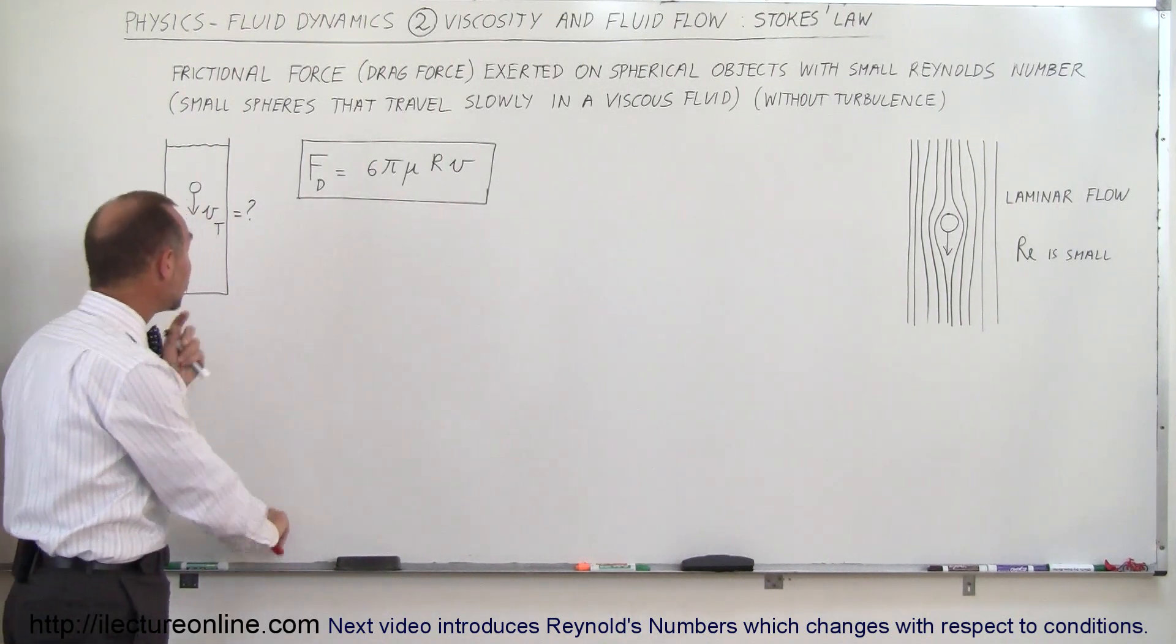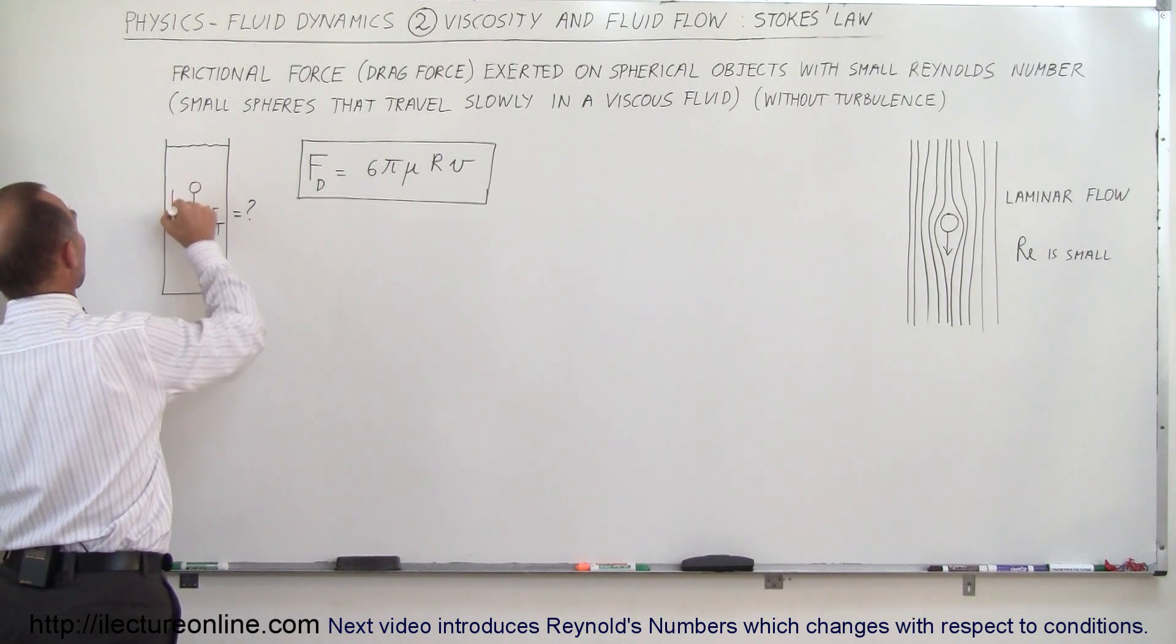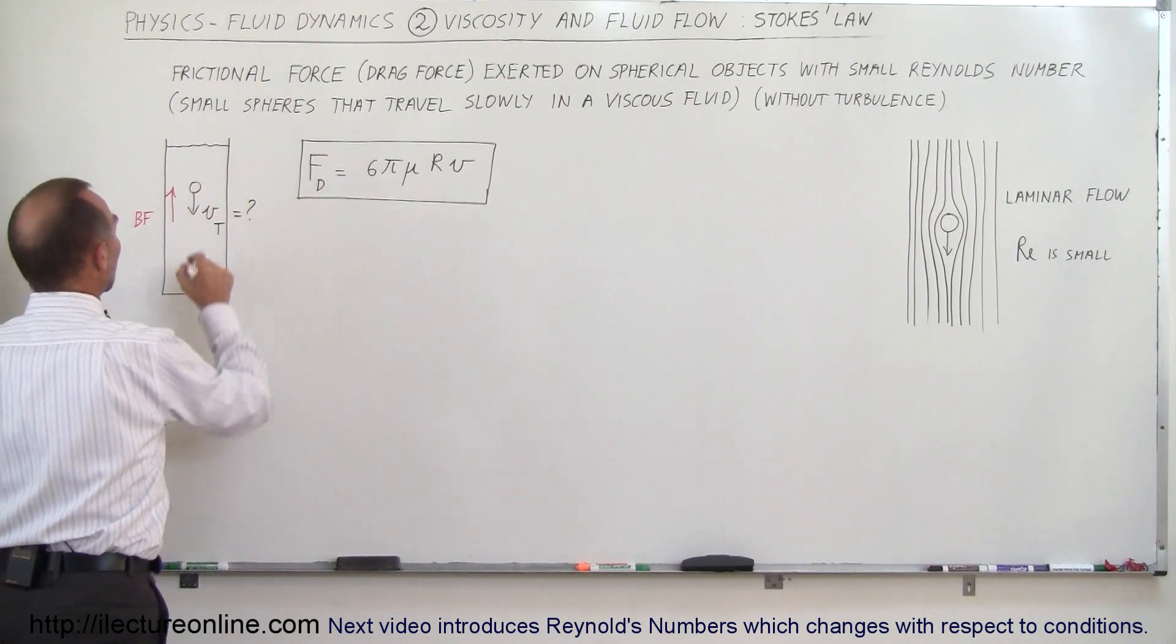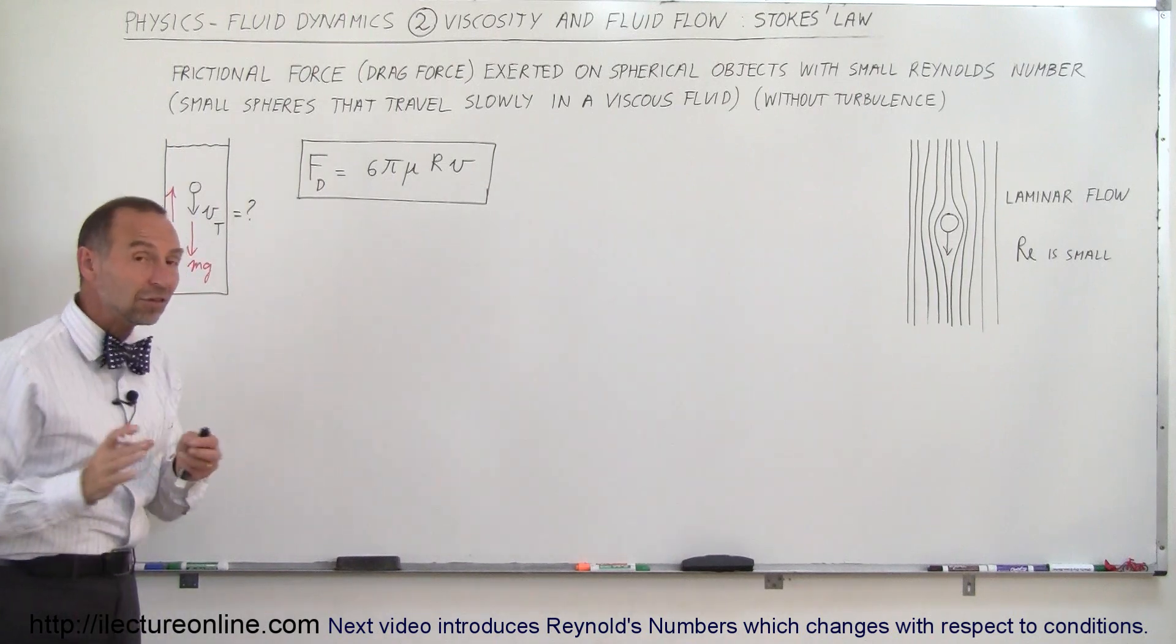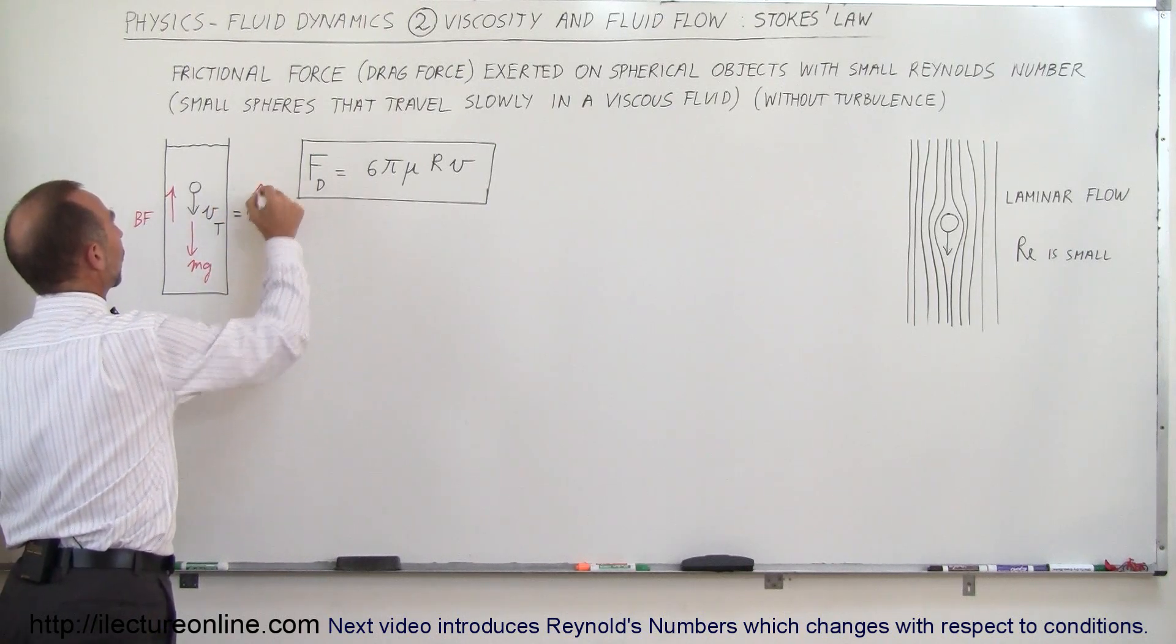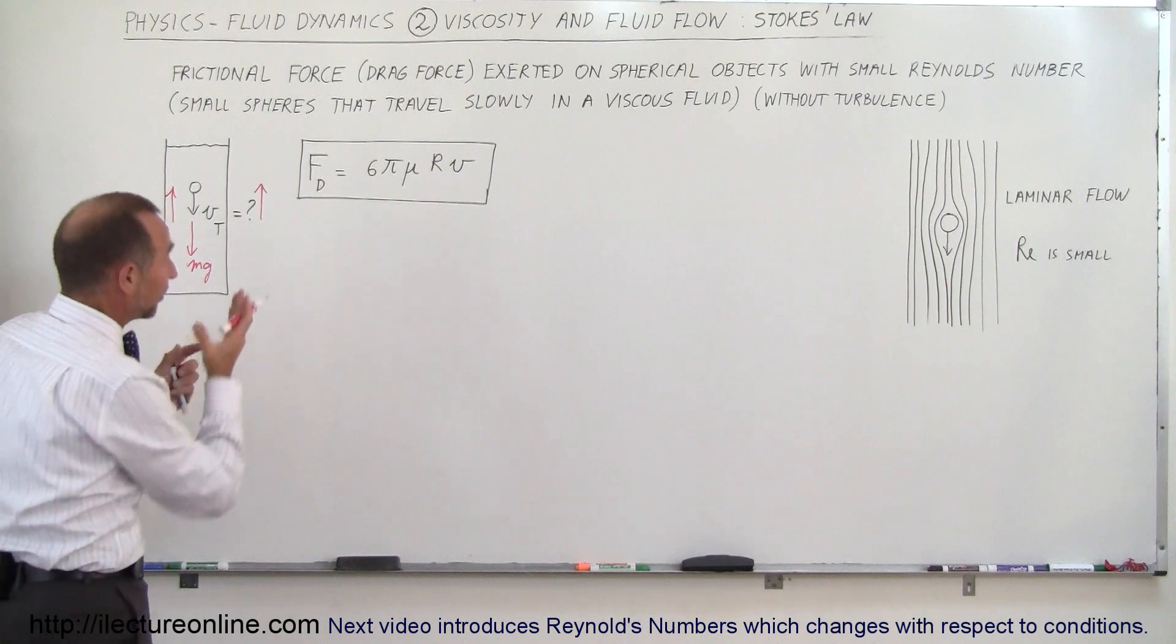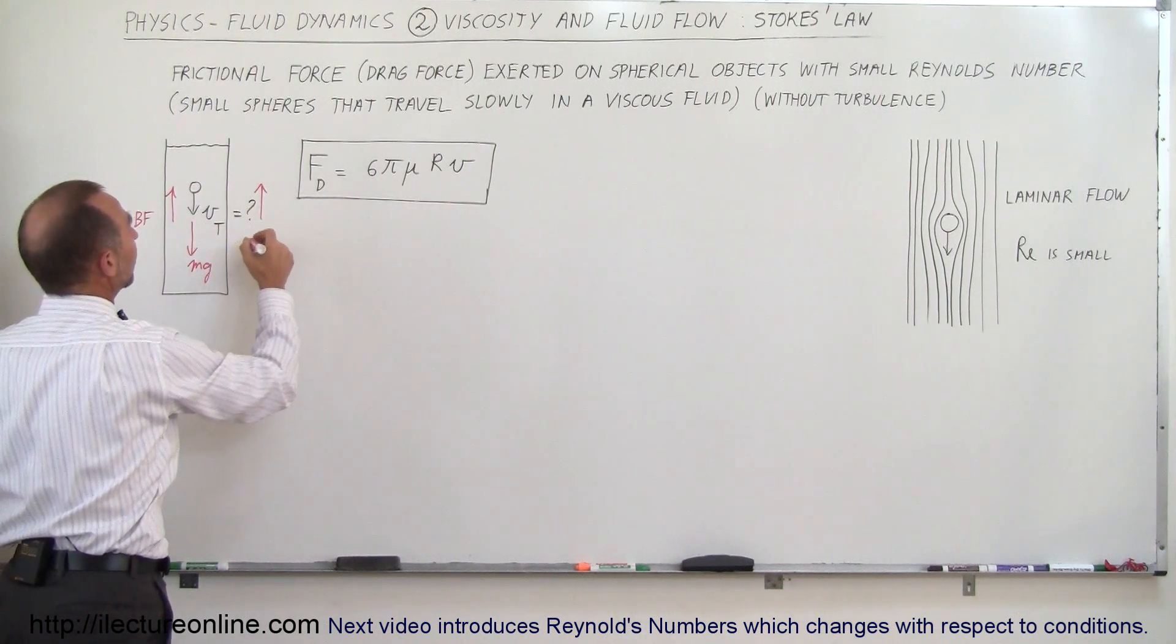Now what are all the forces on the object? Well, for one thing there will be a buoyancy force acting upward, there will be the force of gravity, mg, acting downward, and then there is that third force that we haven't talked about before in a situation like this: there will be the drag force which is acting in the opposite direction to the motion of the marble or the sphere, so it would be Fd.